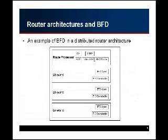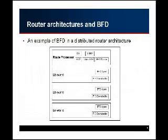In a distributed BFD architecture, individual line cards each have a BFD agent that maintains adjacencies. Typically on a line card, things run lean — you have FIB downloading but not many routing protocols. Most intelligence runs on the route processor: IGP, BGP, network management, SNMP, Telnet, SSH. There also has to be a master BFD process on the route processor that coordinates with the distributed BFD instances on the line cards.